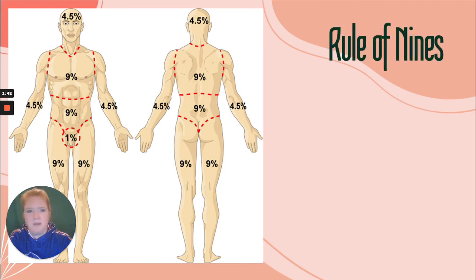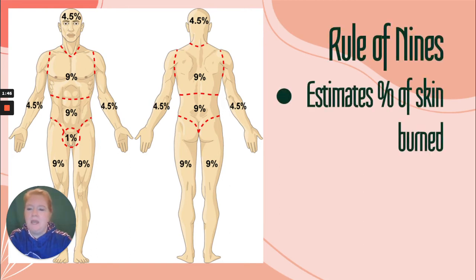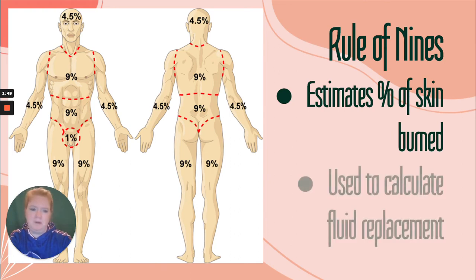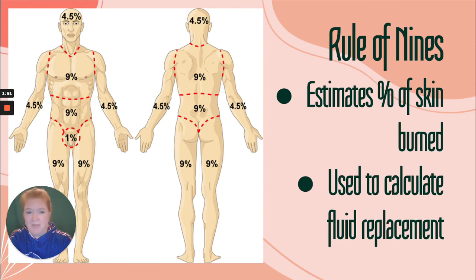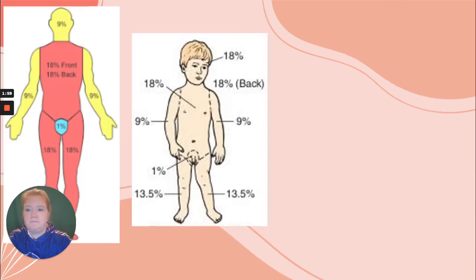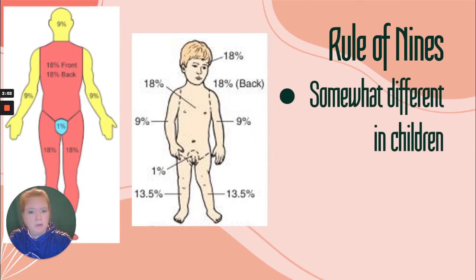The next major topic about burns is the rule of nines. The rule of nines is used to estimate the percent of skin burned. Why do we need to do that? It helps to calculate the amount of fluid needed to replace what was lost. It's a little bit different in children — the percentage is higher in the head area and lower in the legs.